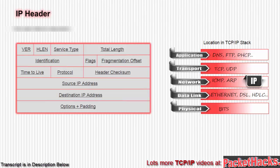The next field is the time to live field. TTL prevents the datagram from hanging around endlessly — like unwanted guests — should the routing tables get corrupted. Each router decrements the TTL by 1, and when TTL reaches 0, the datagram is discarded. You may be aware that TTL is what makes the traceroute command work.